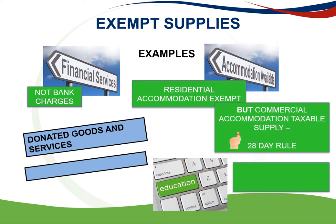The supply of commercial accommodation is subject to VAT at the standard rate. Commercial accommodation is defined as lodging or board and lodging together with domestic goods and services in any house, flat, apartment, room, hotel, guest house, etc. Output tax must be levied on the full value of the supply where accommodation and domestic goods and services are supplied by a hotel or guest house for a period of 28 days or less. If supplied for 28 days or more, the consideration in money is deemed to be 60% of the all-inclusive charge, and this 60% will apply from day one if the period exceeds 28 days.